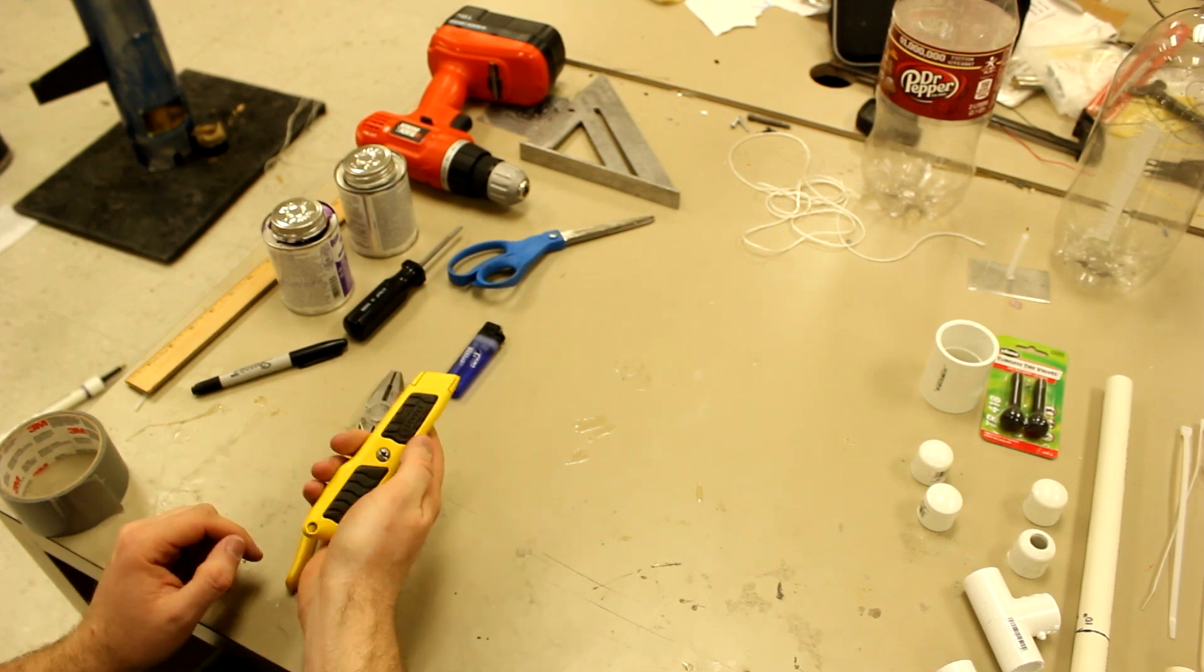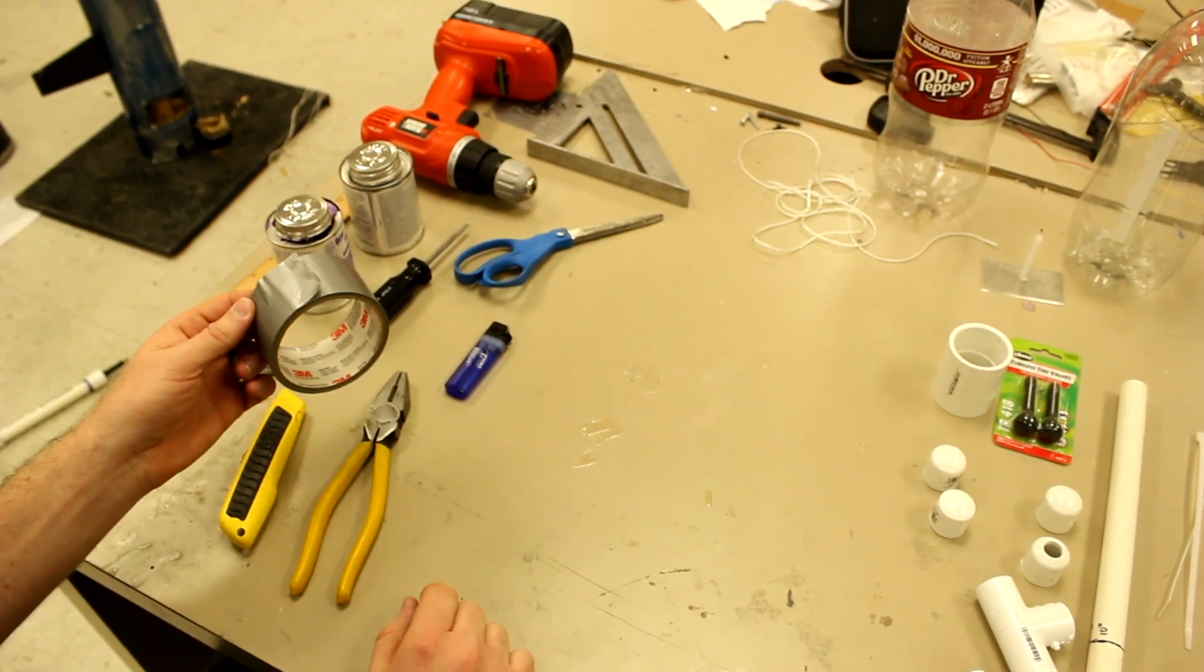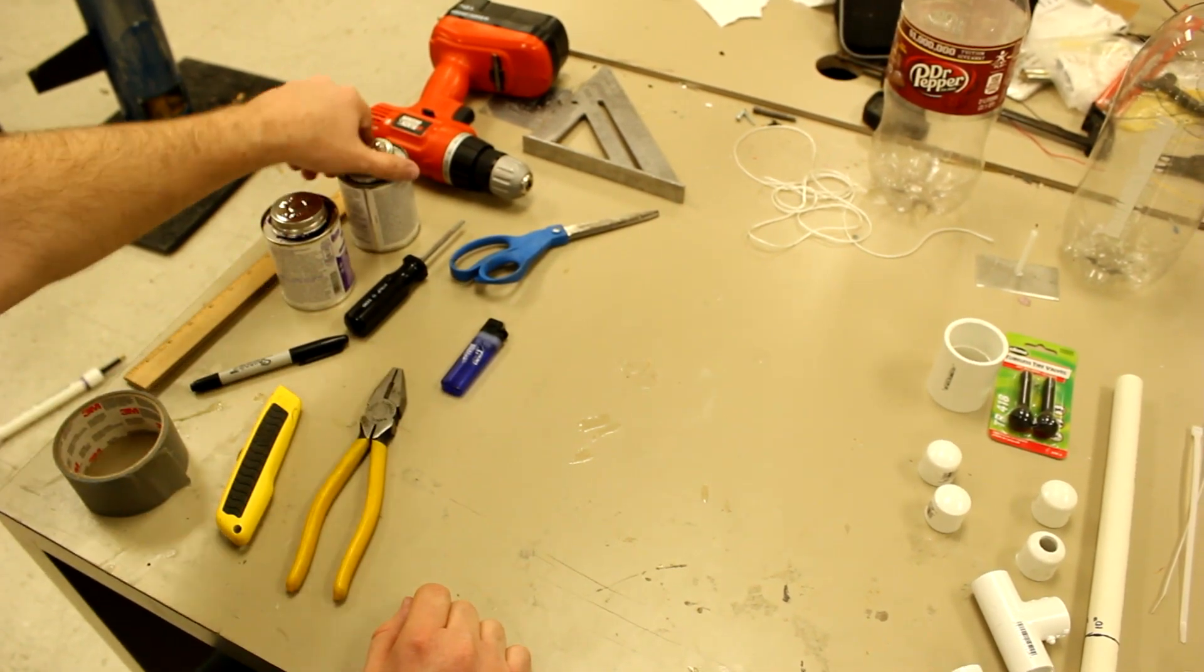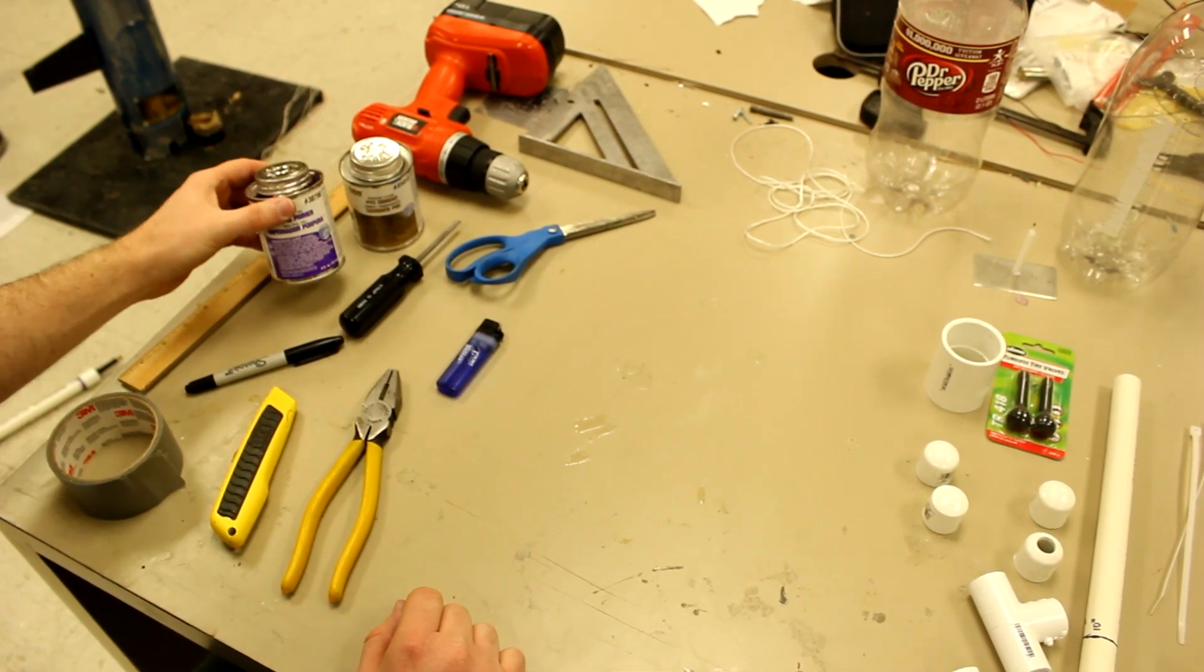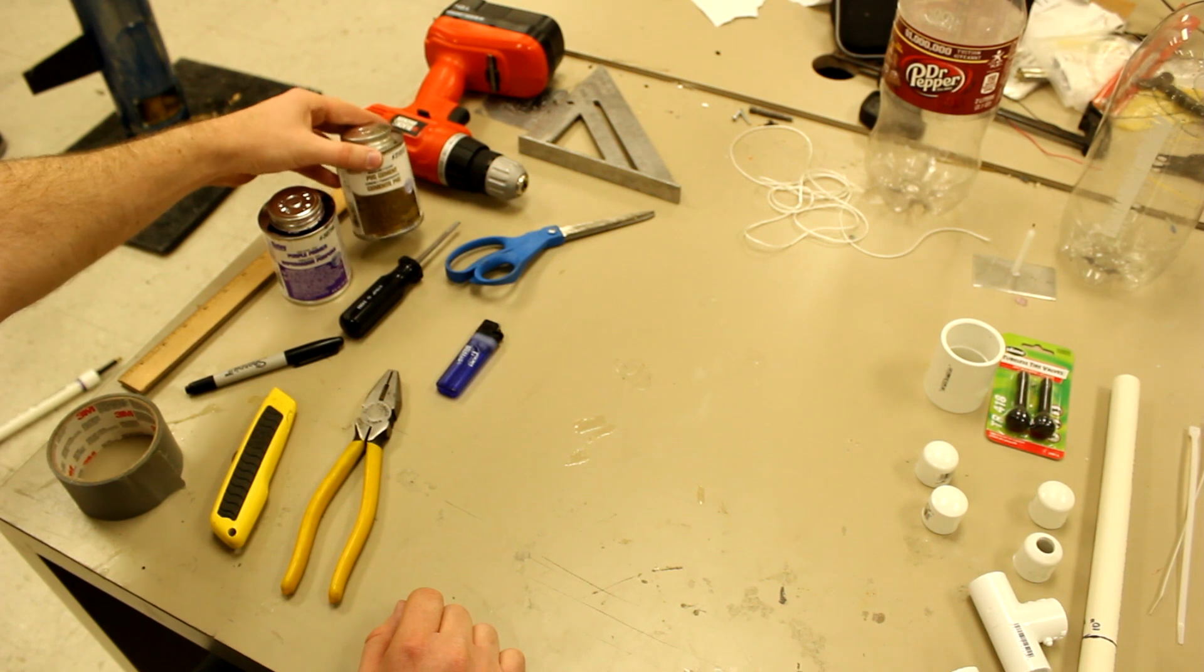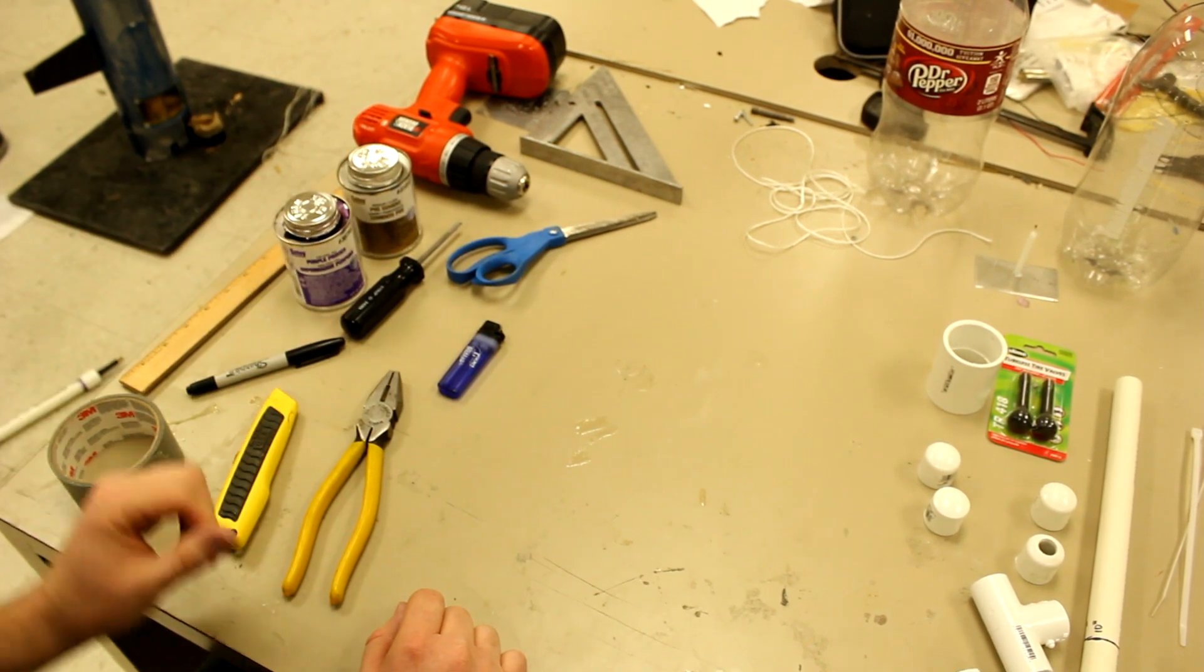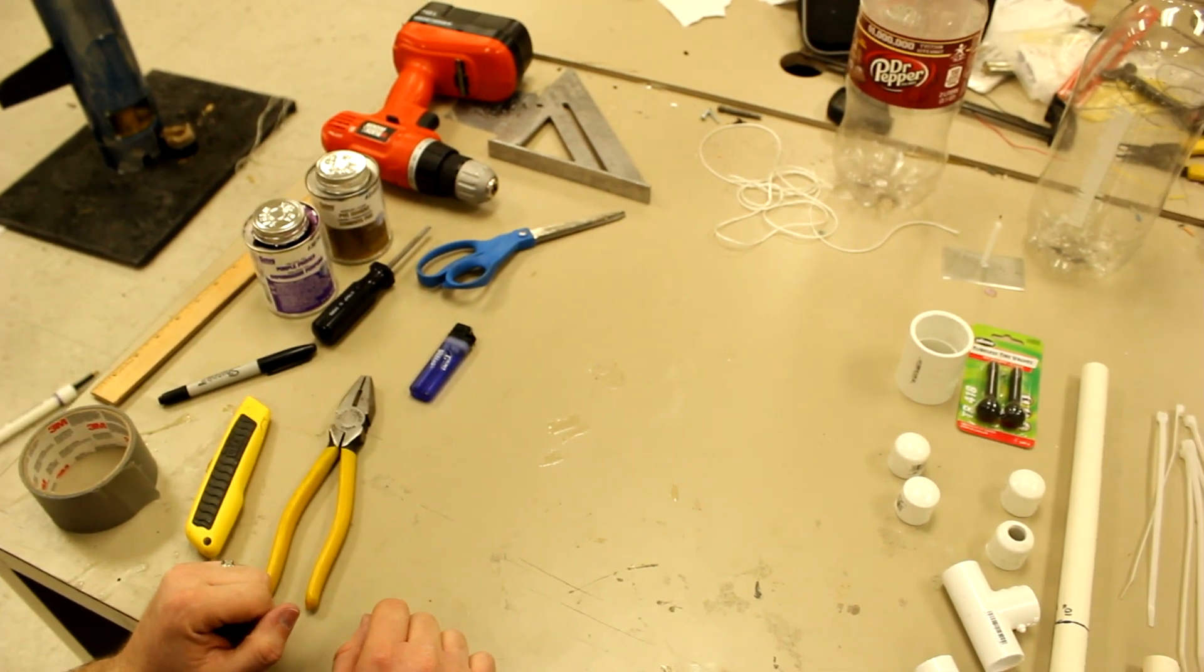It helps to have a box cutter if you have one. And you want some duct tape. And finally, you'll need some PVC adhesive. And you don't necessarily need the primer but most people that have PVC cement will also have a primer and that helps to make a better seal. So let's get started.